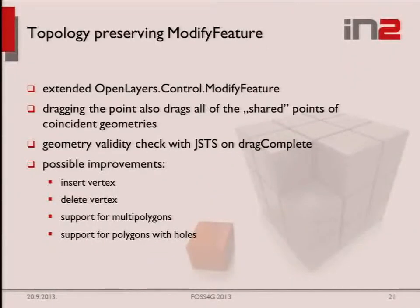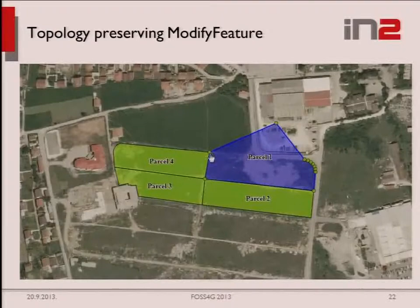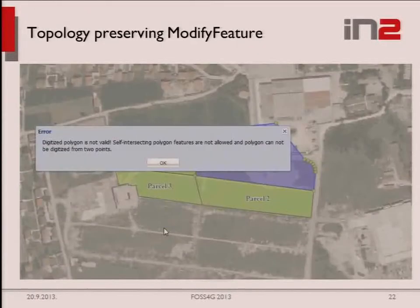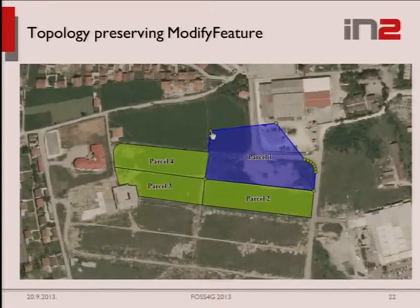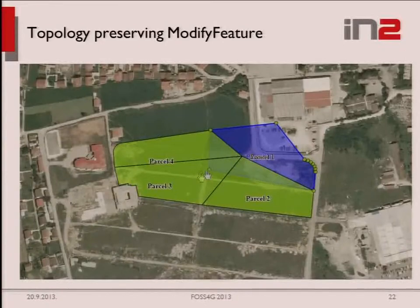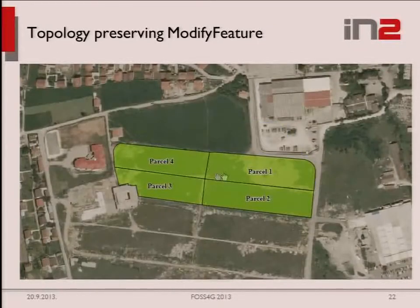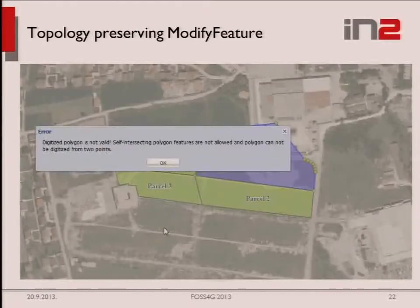A very cool feature is the topology-preserving modify feature — an extended version of the OpenLayers modify feature. When you drag a point that coincides with other points, those coincident points move with it, preserving topology. It also has a validity check that does not allow self-intersecting polygons, and it has a rollback: when an error occurs in geometry, it reverts to the last valid state. It relies on JSTS for all operations. Still needed are an insert tool for adding vertices on all coincident geometries and a delete tool — those are work in progress.